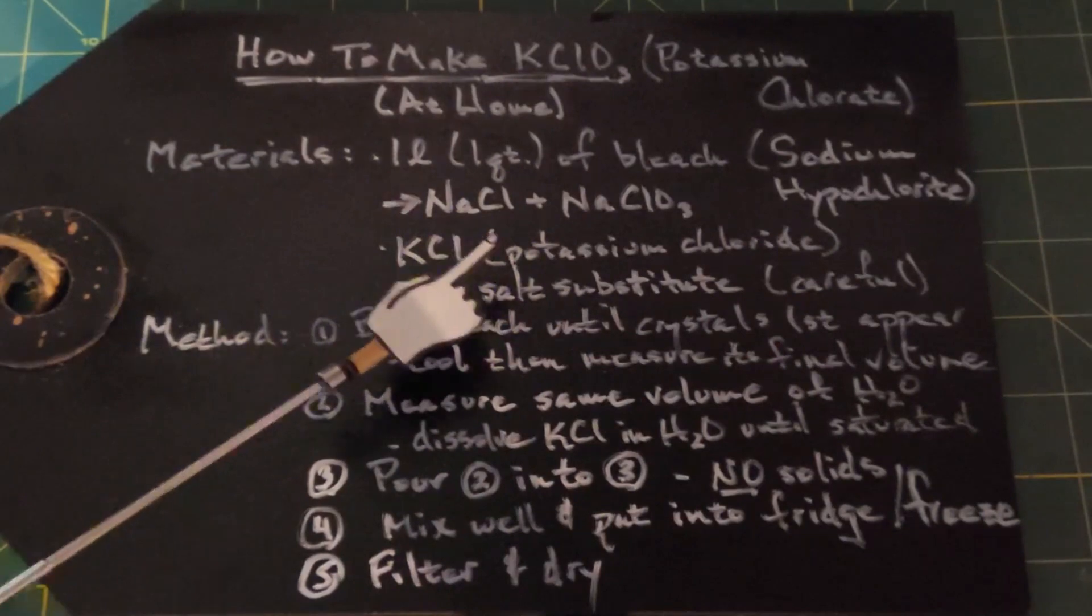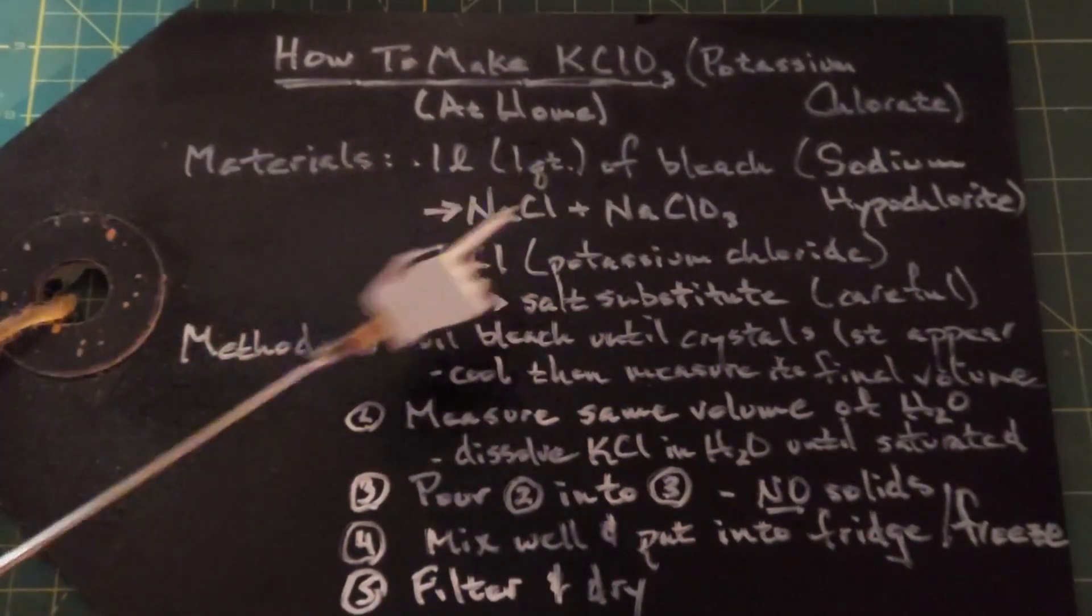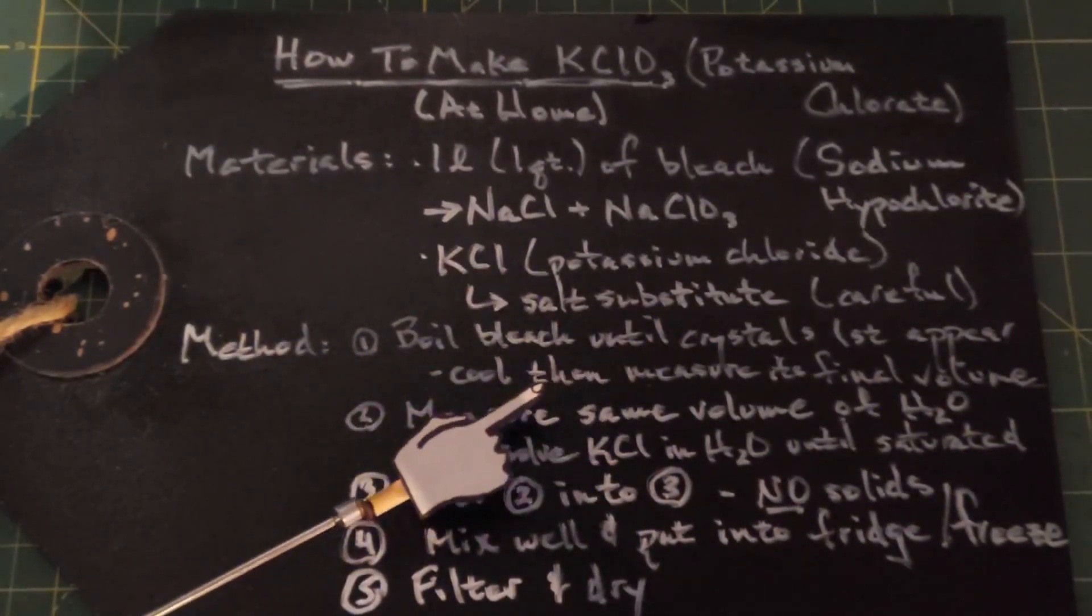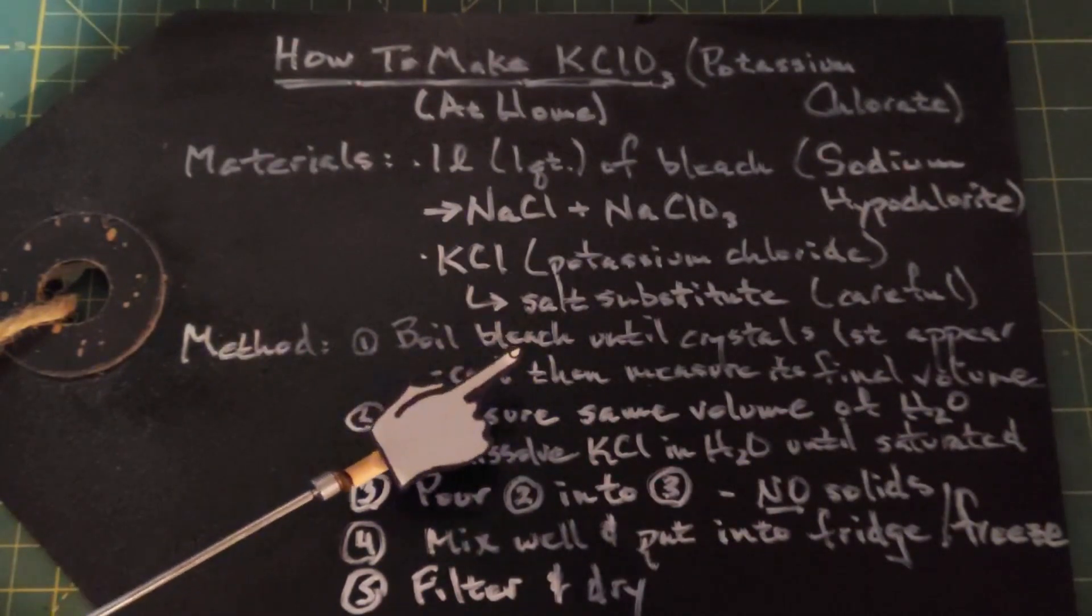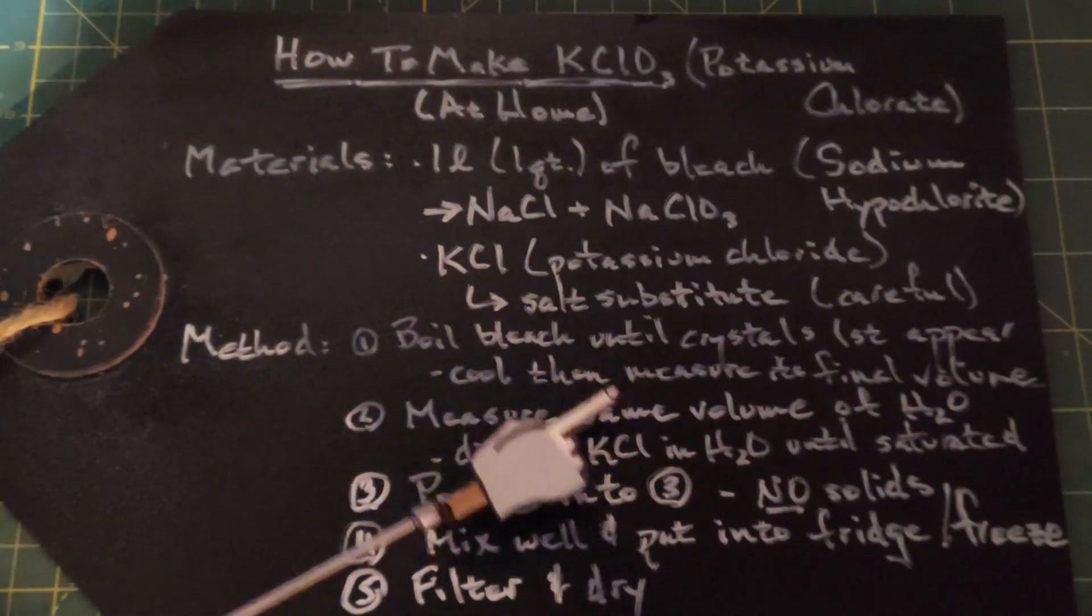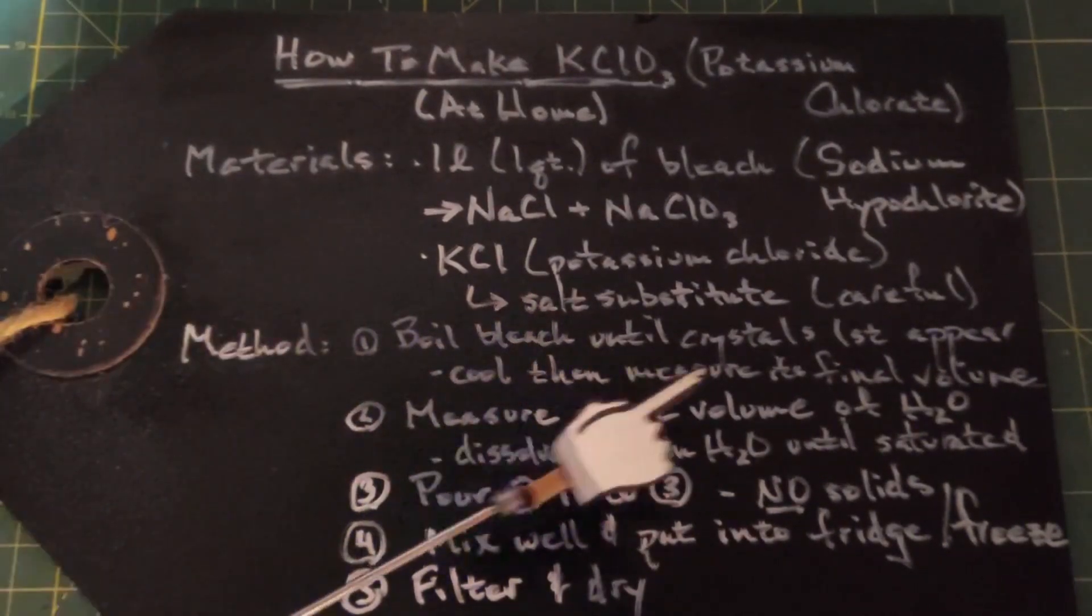Our method for making potassium chlorate starts with boiling the bleach down until crystals first appear. This will be a bit of time because most of the time your bleach is around five to seven percent, so you're boiling off a lot of water to get down to the point where you first see crystals. Once you boiled it down, let it cool.